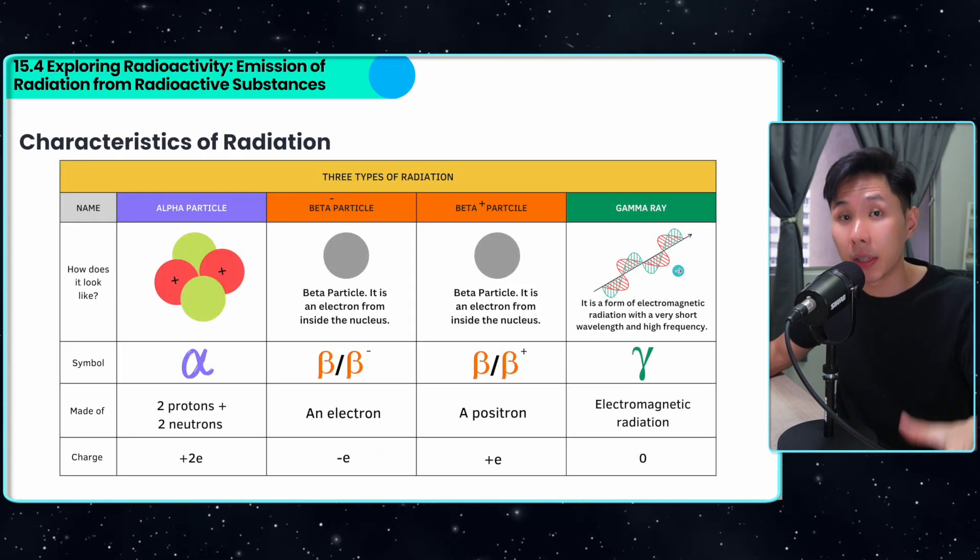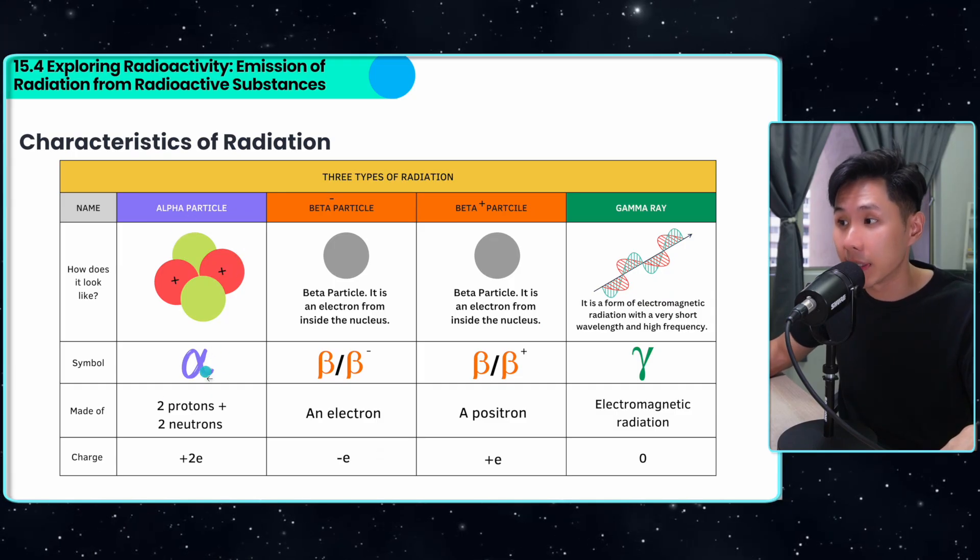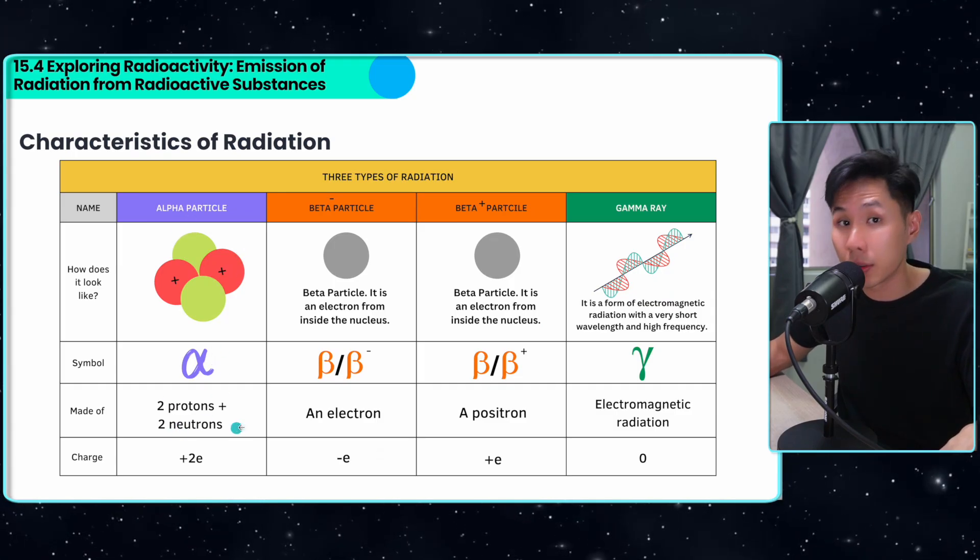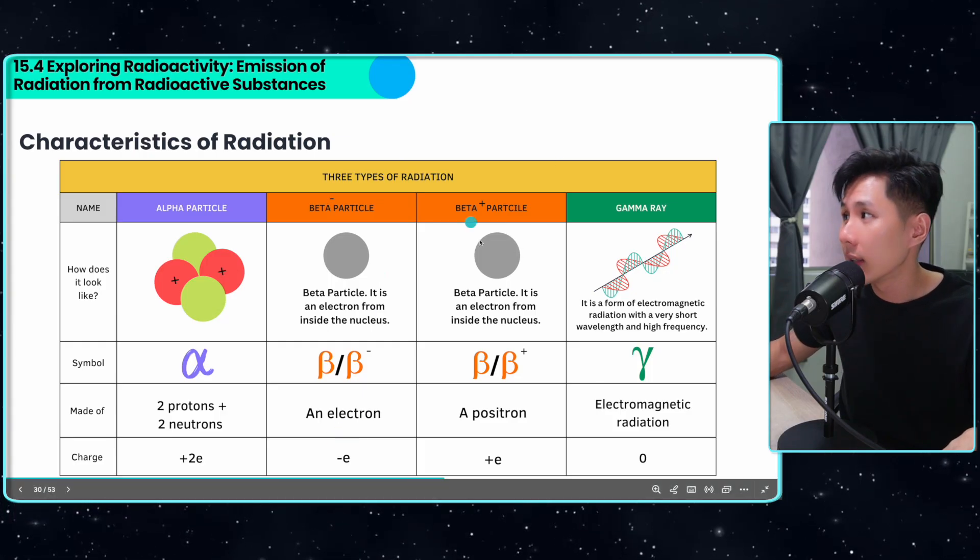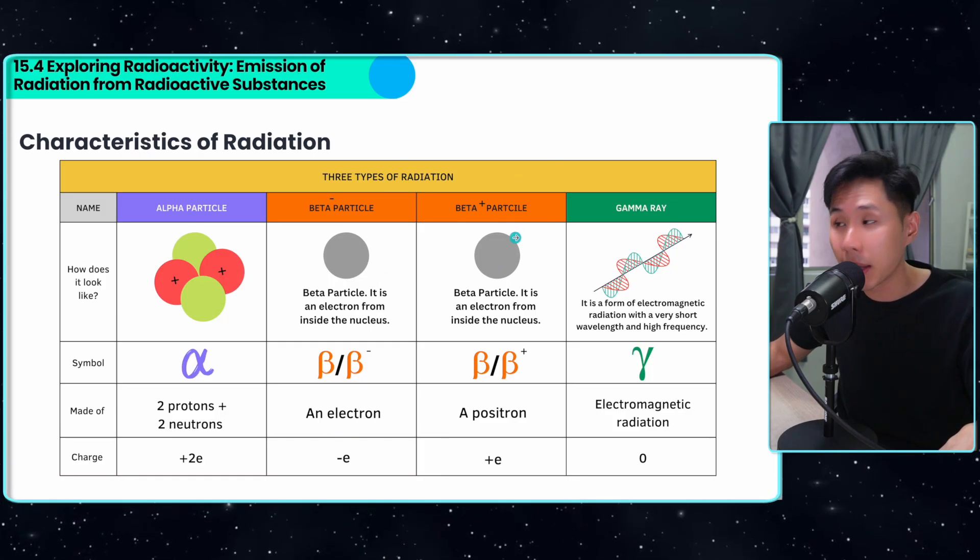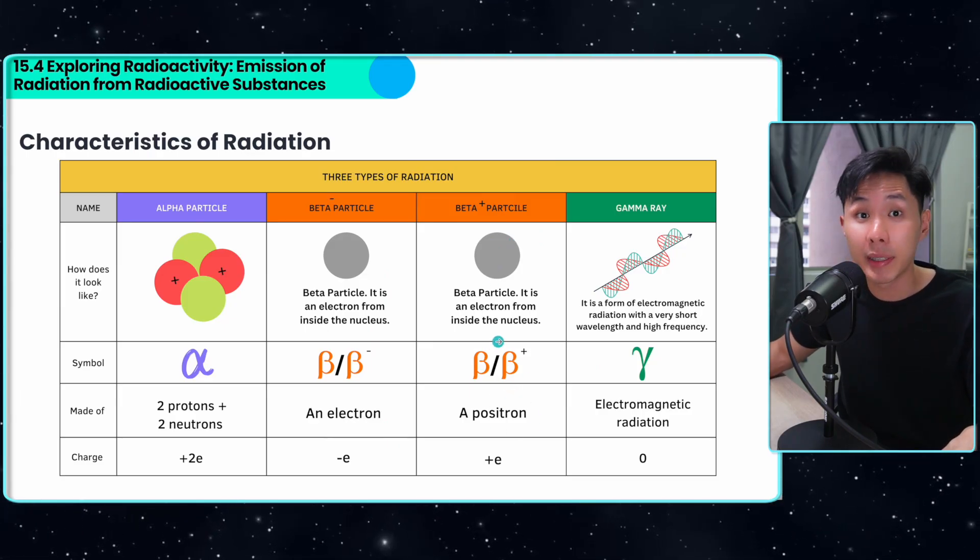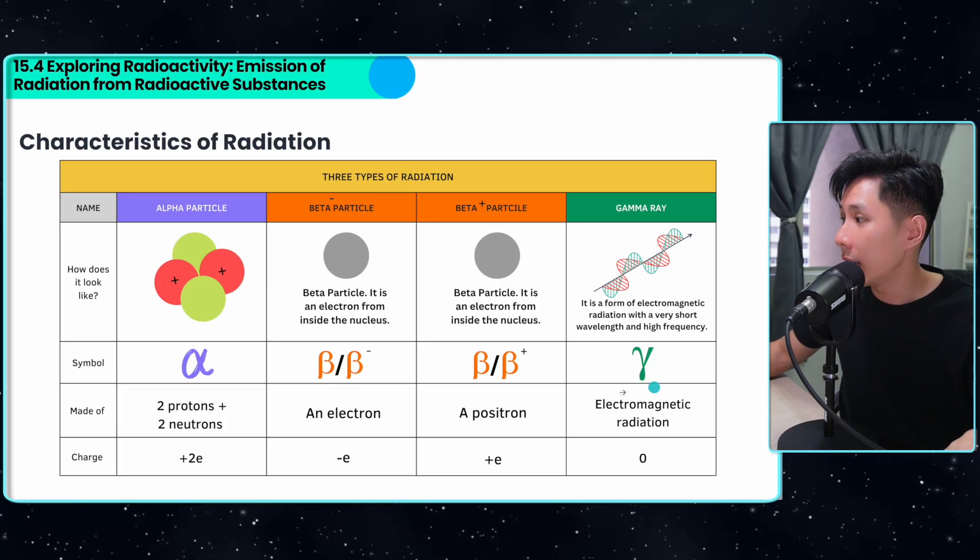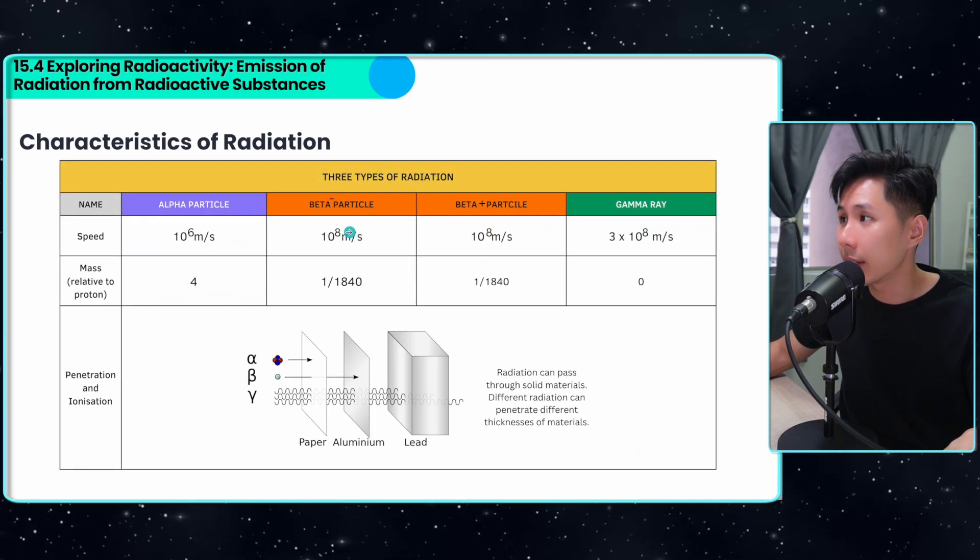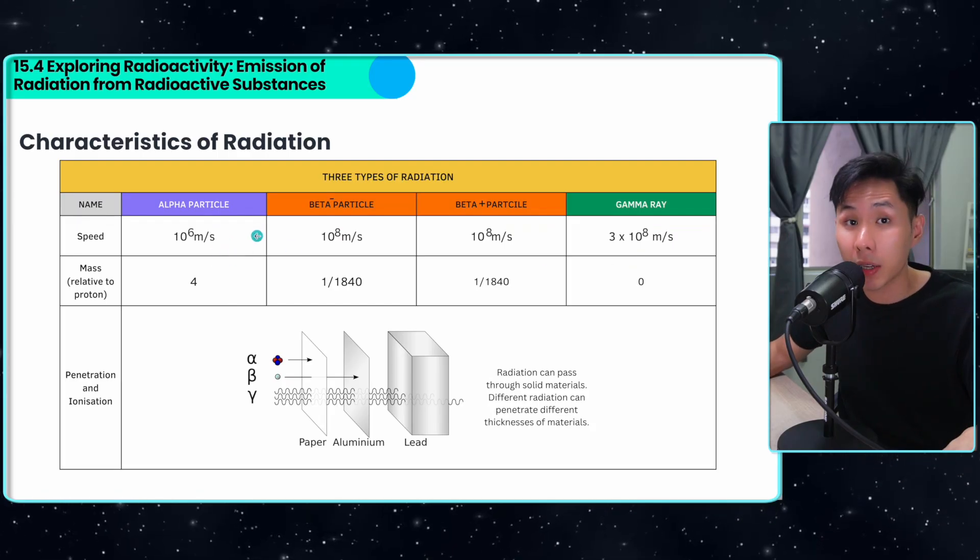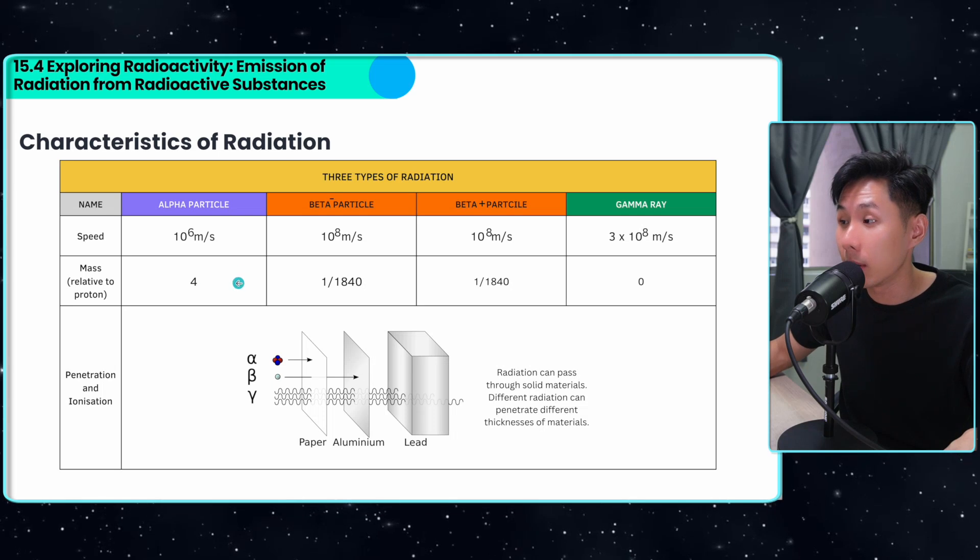These are the characteristics of the three types of radiation. Alpha particles are the heaviest. This is the symbol. They are made out of two protons and two neutrons. Beta particles are made out of only one electron. Something new for you is beta plus particles, which we call a positron. It is just an electron, but it is positively charged. Gamma rays are electromagnetic radiation. More characteristics here: that's their speed. You can see alpha particles are the slowest and gamma rays the fastest, their mass as well.